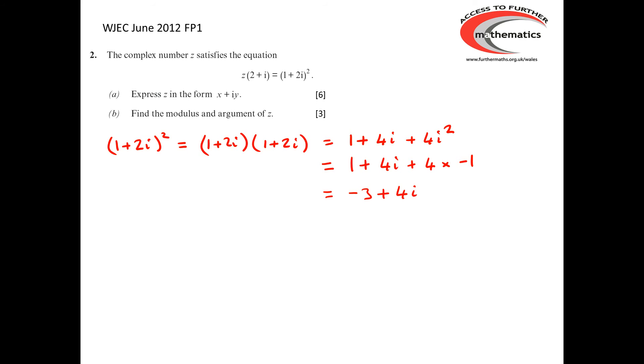So, the original equation now can be rewritten as z(2 + i) = -3 + 4i. And we can solve that equation by dividing each side of the equation by 2 + i. So, we've got z must be (-3 + 4i) divided by (2 + i).